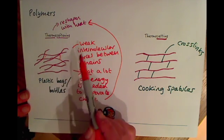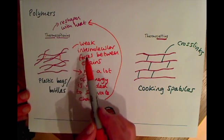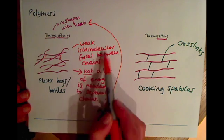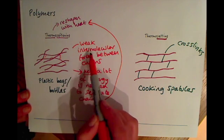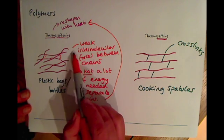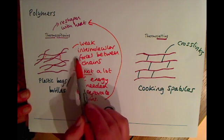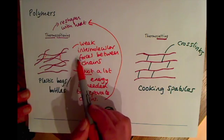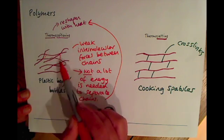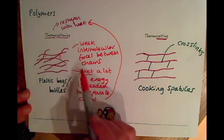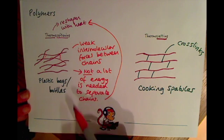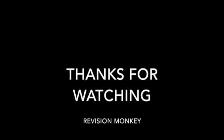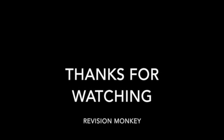So just that extra bit for higher tier — a lot of the higher content ties back to the idea of intermolecular forces. Remember that weak intermolecular forces between the chains allow thermosoftening polymers to be reshaped easily with heat.